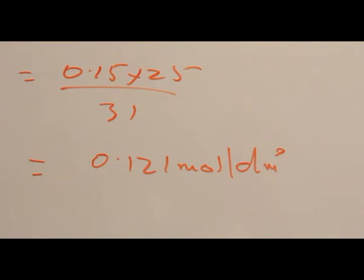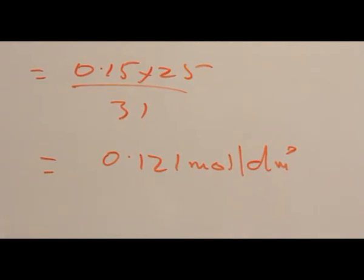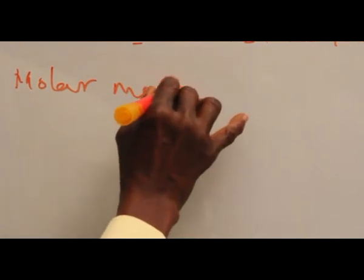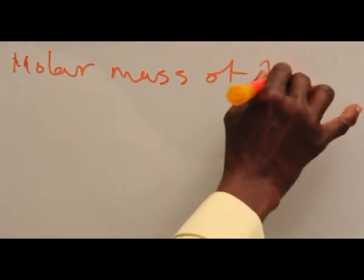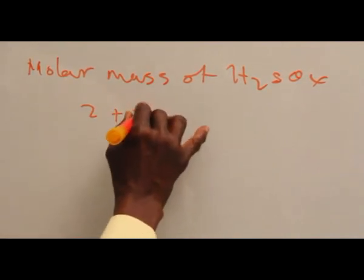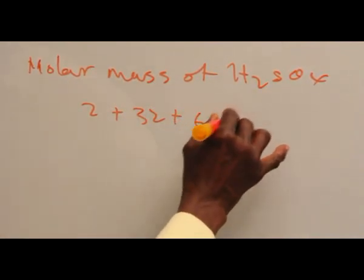Now, this is the concentration of the acid in mole per dm³, so to convert it to gram per dm³, we simply multiply by the molar mass. The molar mass of H2SO4 is 2 times 1 plus 32 plus 64, that is 98.